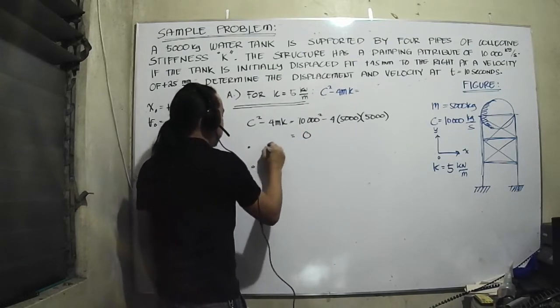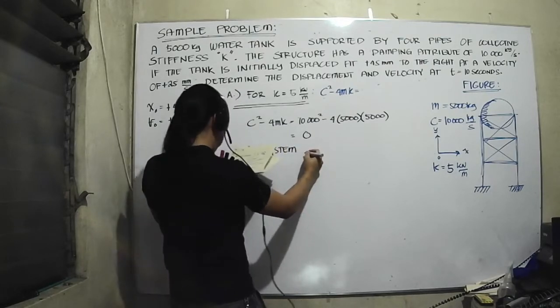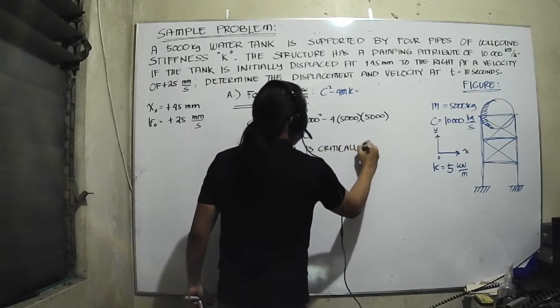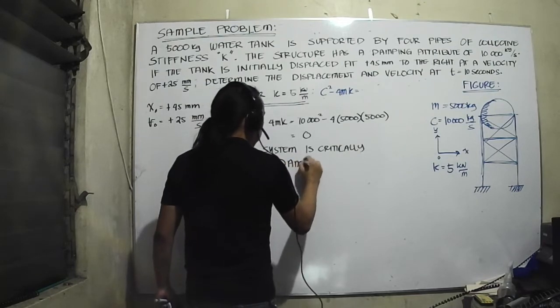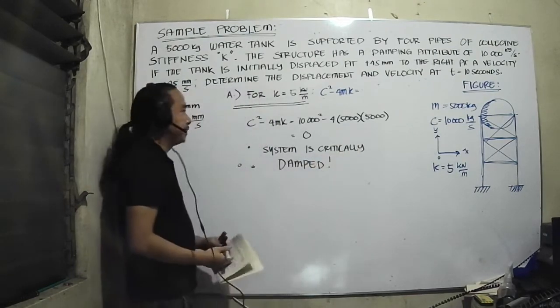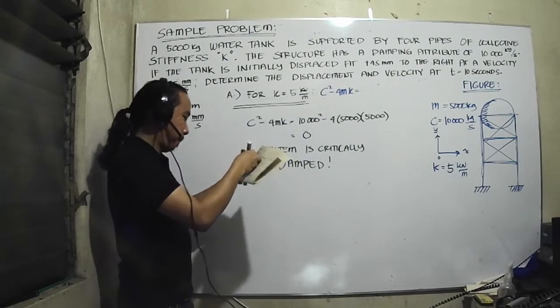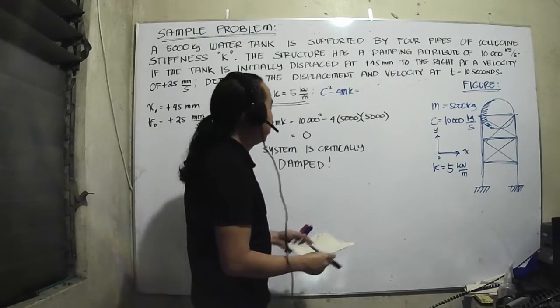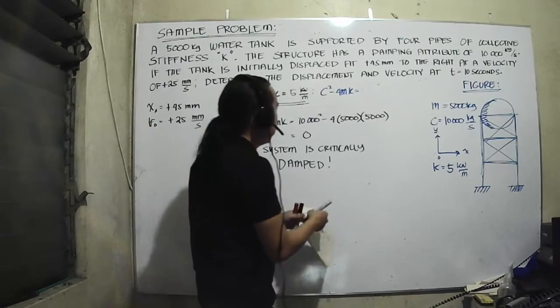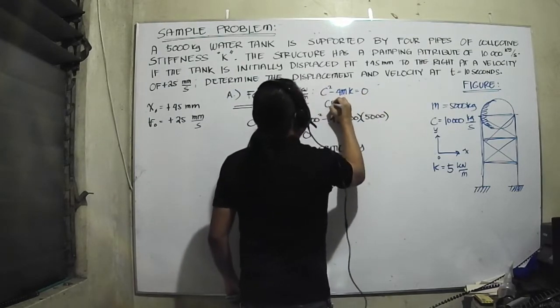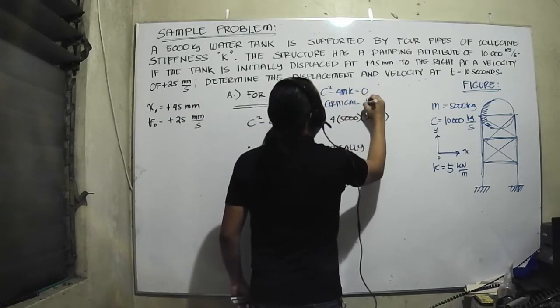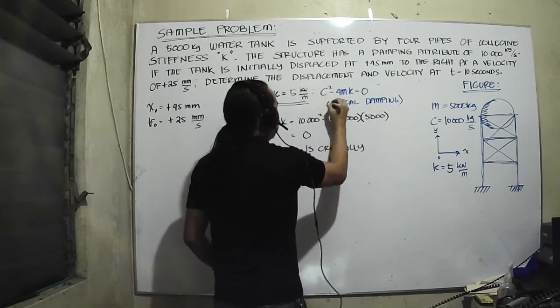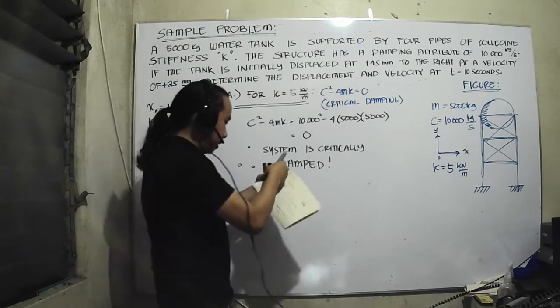Okay, so we can conclude that the system is critically damped. When you say critically damped, this means that the discriminant is equal to 0, so the system is critical.